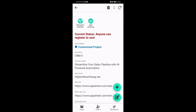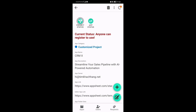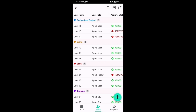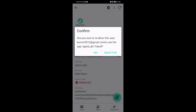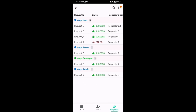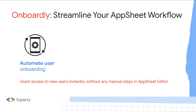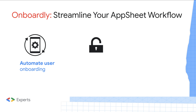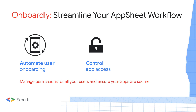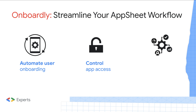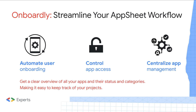What I have here is an app called OnBotly. It is designed and developed by myself, Danny, a Google Developer Expert in Google Workspace. With OnBotly, we can do the following key things: grant access to new users instantly without any manual steps; manage permissions for all your users in the AppSeed editor and ensure your app is secured; and get a clear overview of all your apps, their status and categories, making it easy to keep track of your projects.